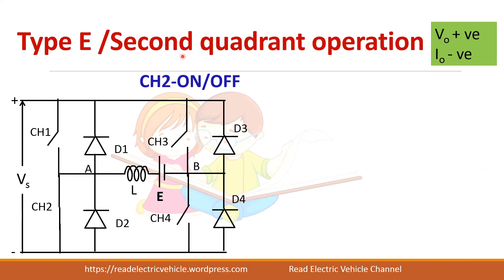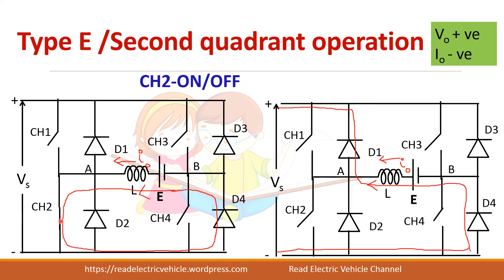For second quadrant operation, I-naught should be negative. CH2 is turned on and off. When CH2 is on, current flows through diode D4 — it freewheels in the negative direction. When CH2 is turned off, the inductor current cannot reverse immediately so it flows through diode D1 to the supply voltage. Current is negative and voltage is positive, as it is connected to the positive supply.